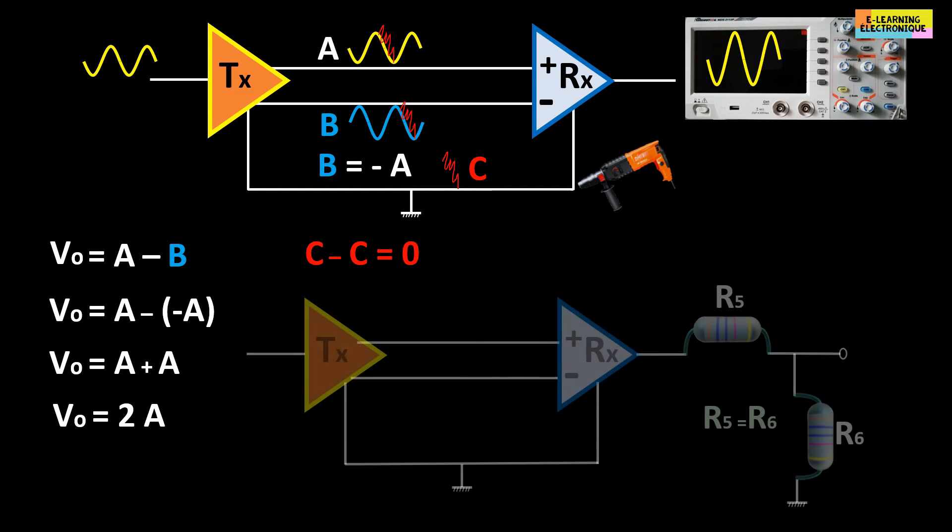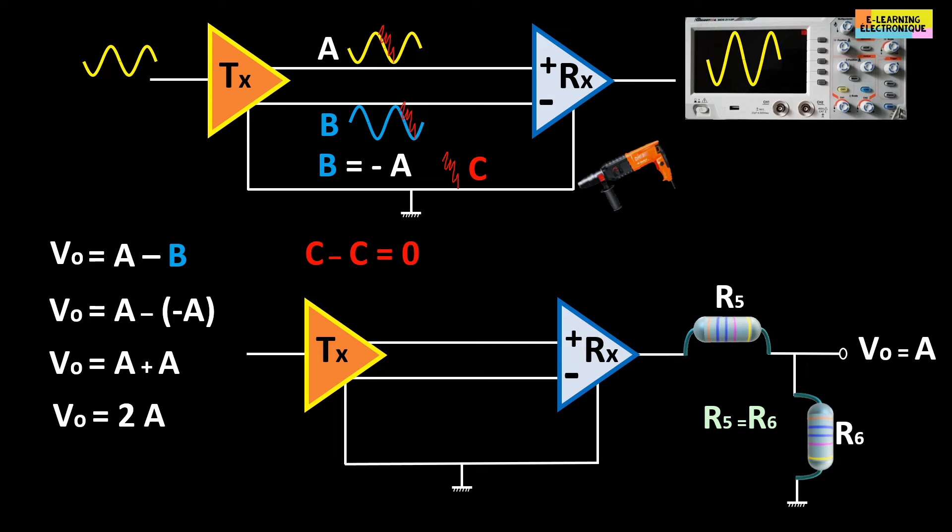If we do not want our original sinusoidal signal to be doubled at the output, we add a voltage divider to the output of the differential amplifier, which will allow us to find an identical signal at the input. We can see that this symmetrical assembly mode has the advantage of immunity to interference on the line and is suitable for signal transmissions with low voltages of the order of one millivolt.